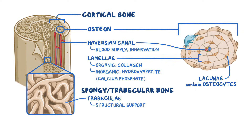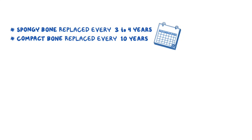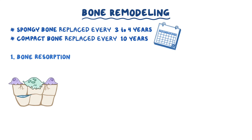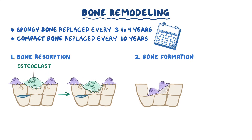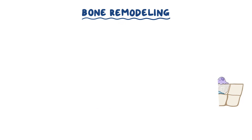At first glance, bone may appear inert and unchanging, but it's actually a very dynamic tissue. In fact, spongy bone is replaced every 3-4 years, and compact bone is replaced every 10 years, in a process called bone remodeling, which has two steps: bone resorption, when specialized cells called osteoclasts break down bone, and bone formation, when another type of cells called osteoblasts form new bone.